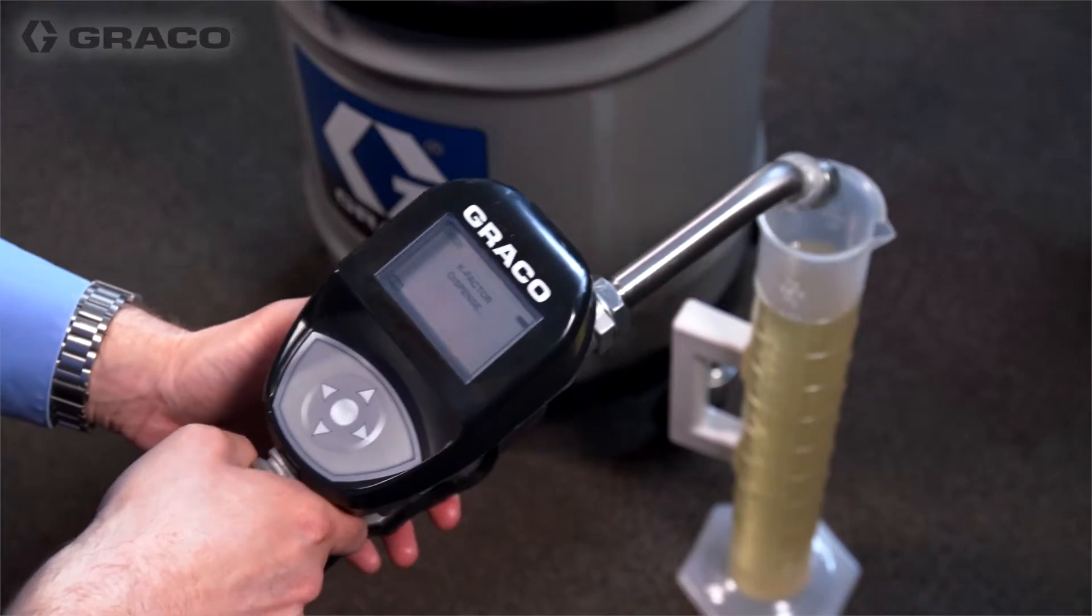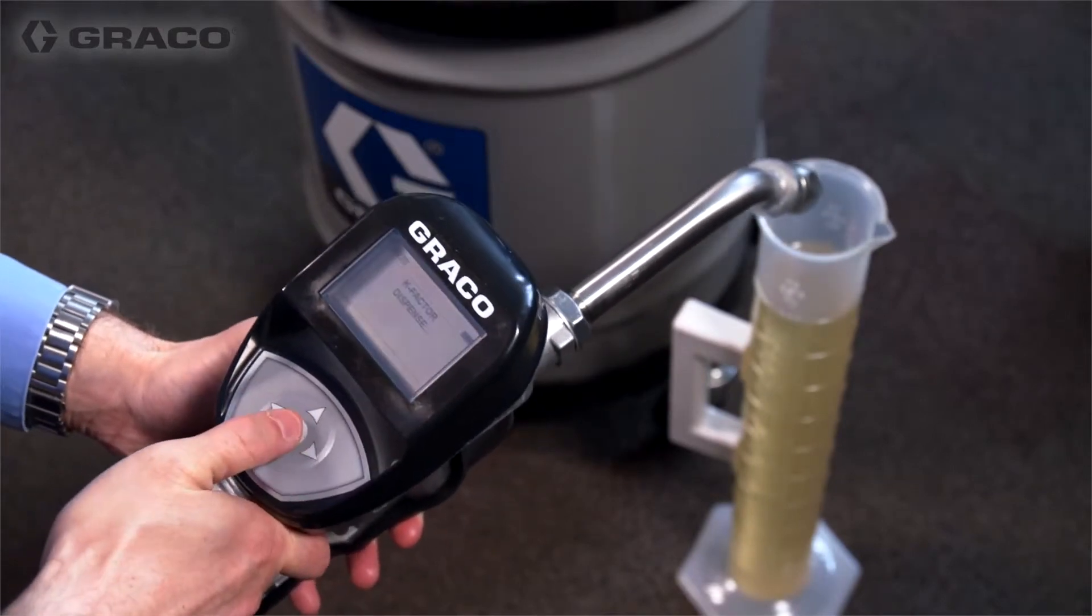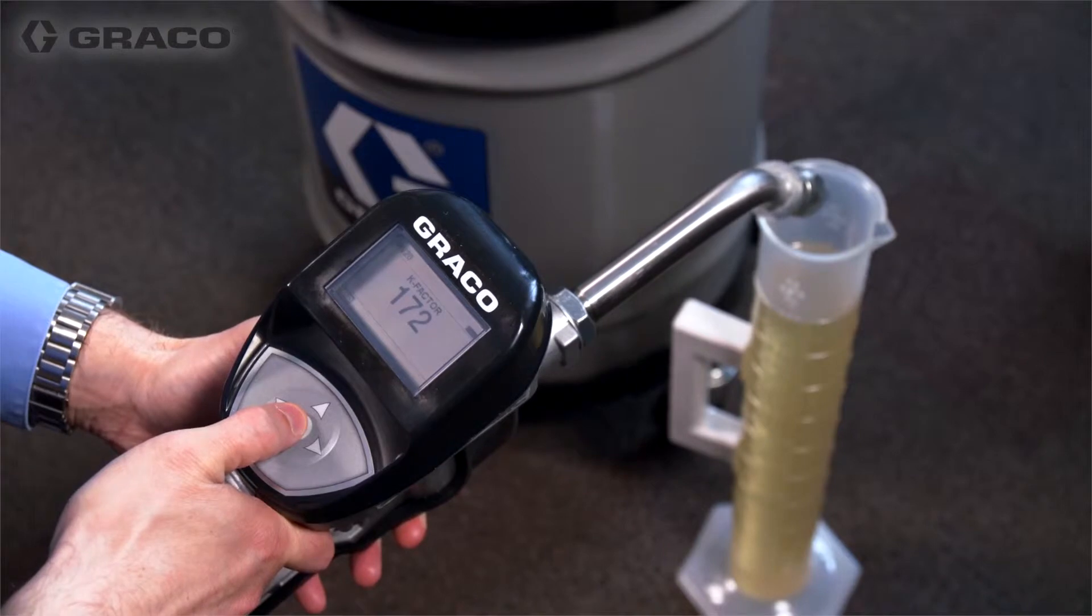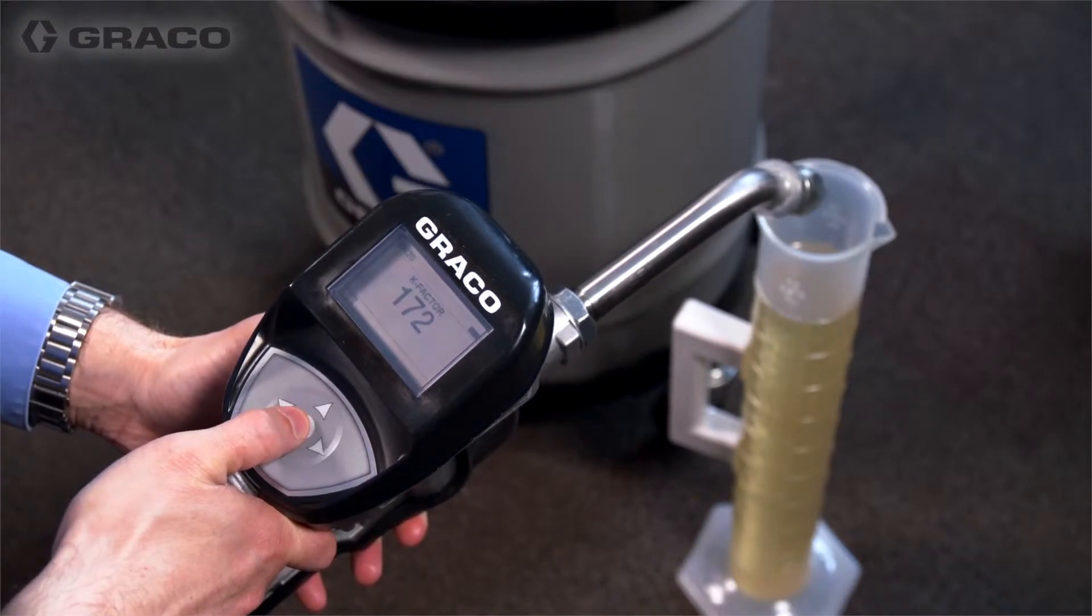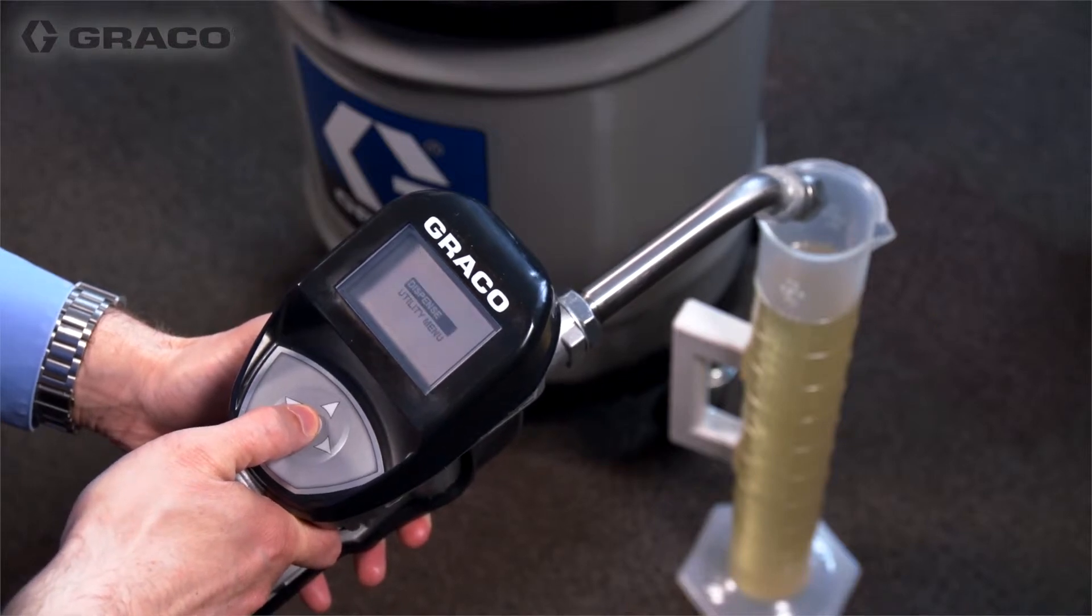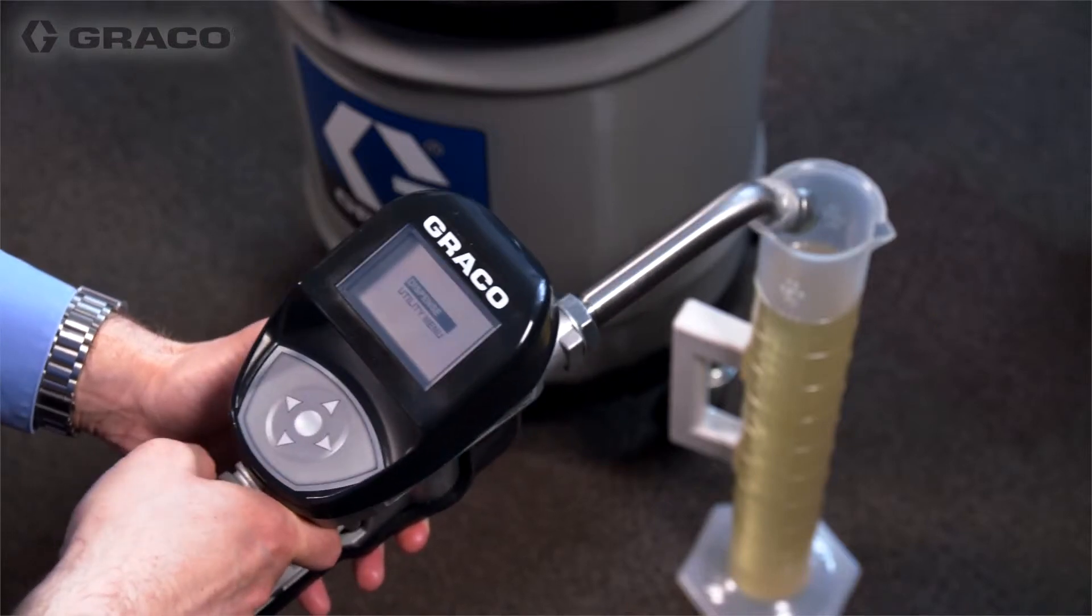When exactly one quart or one liter of fluid is dispensed into the container, press the Enter button on the keypad to select End. A screen displaying the quantity of fluid dispensed displays. Press the Enter button on the keypad again to select End and save the new calibration factor.